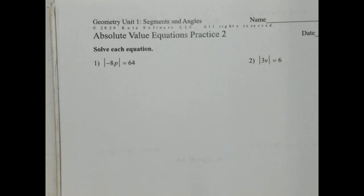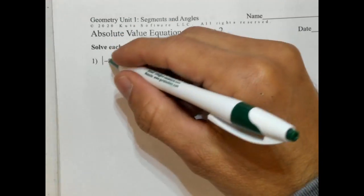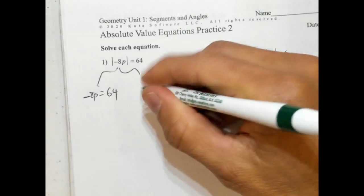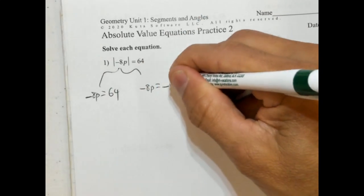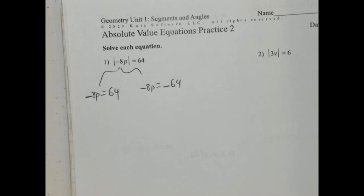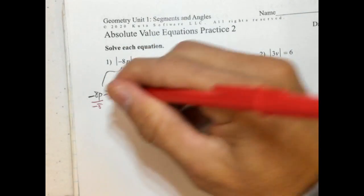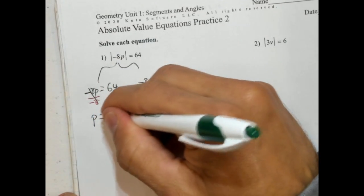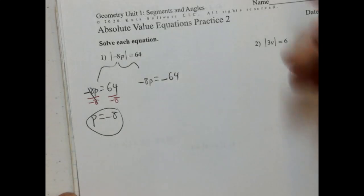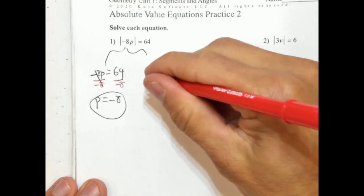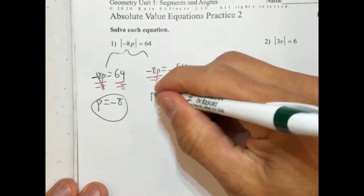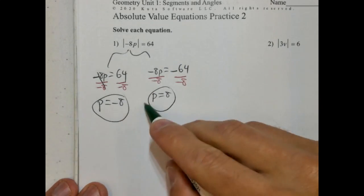We have negative 8p inside absolute value is equal to 64. Because this absolute value is by itself, we're going to split it and rewrite it. So we're going to write negative 8p equals 64, and negative 8p equals negative 64. We're going to get p by itself by dividing both sides by negative 8. So p equals negative 8, and p equals positive 8.